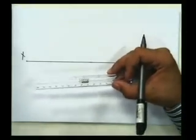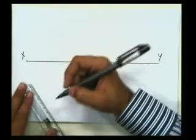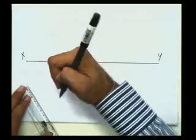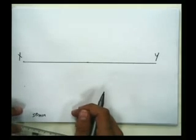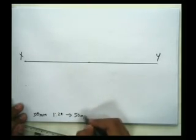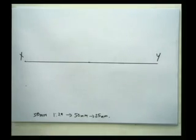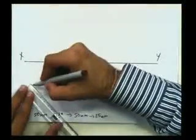I will draw the base square first in the top view. The side of the base is 50 mm — that is 5 centimeters — which would be quite large on paper. So I'll use a scale of 1:2, meaning 50 mm in the question becomes 25 mm on paper. The square I'm going to draw will have a side of 25 mm. I'm making this a bit colorful so it looks clearly different.